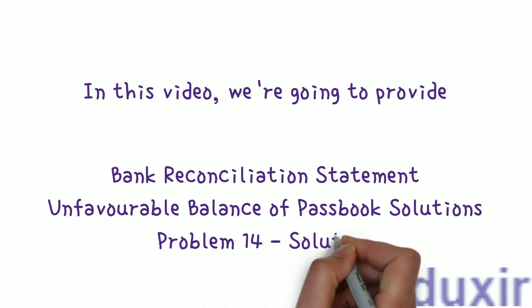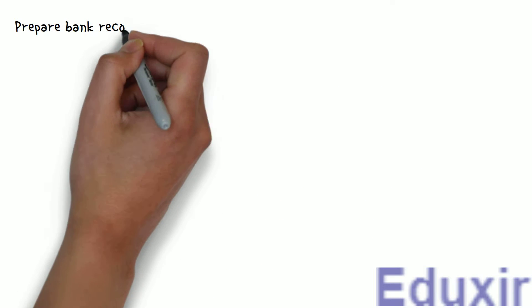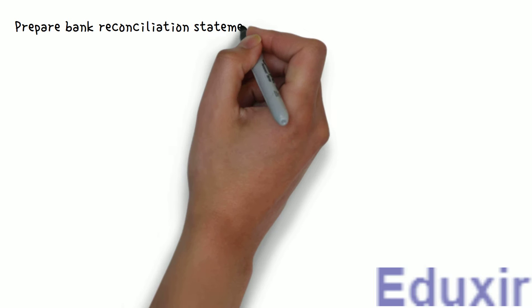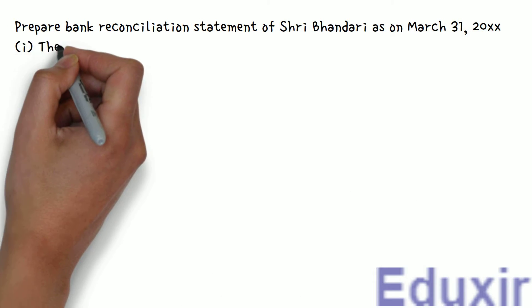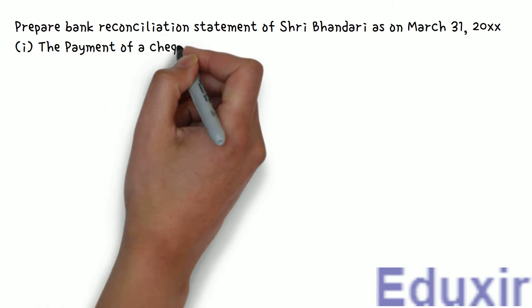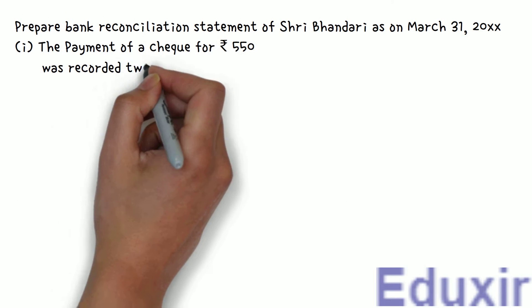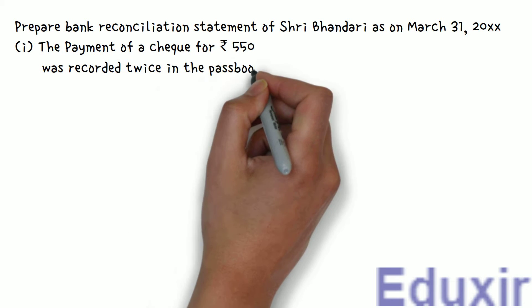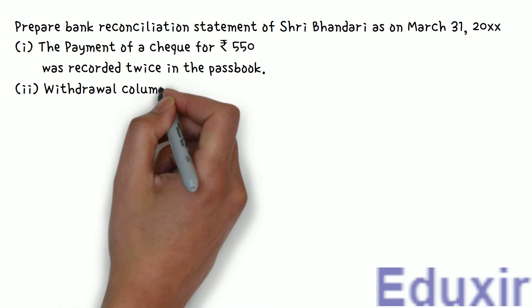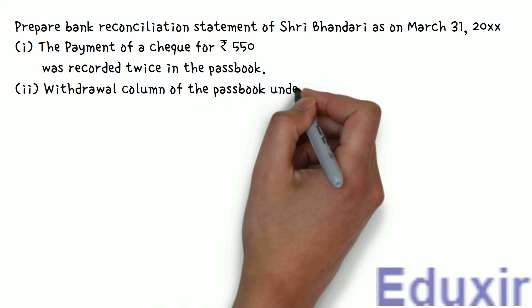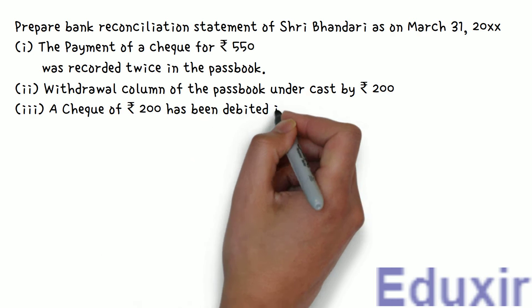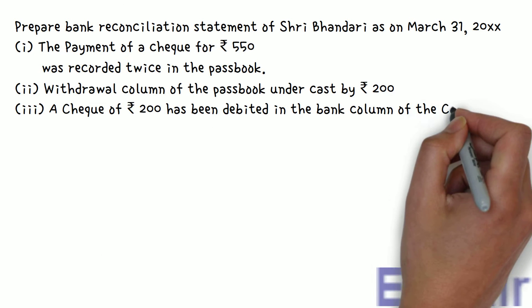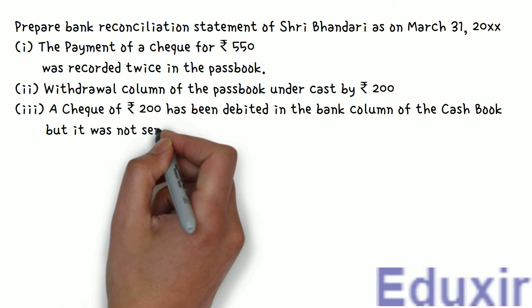Problem 14 Solution. The problem statement is as follows: Prepare Bank Reconciliation Statement of Sri Bhandari as on March 31st, 2000+. 1. The payment of a cheque for 550 rupees was recorded twice in the passbook. 2. Withdrawal column of the passbook undercast by 200 rupees. 3. A cheque of 200 rupees has been debited in the bank column of the cashbook, but it was not sent to bank at all.